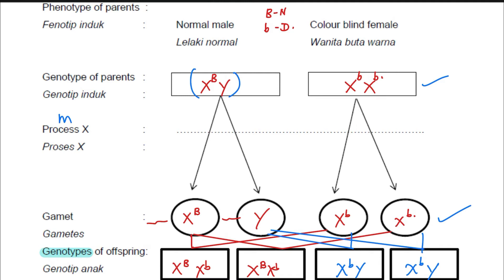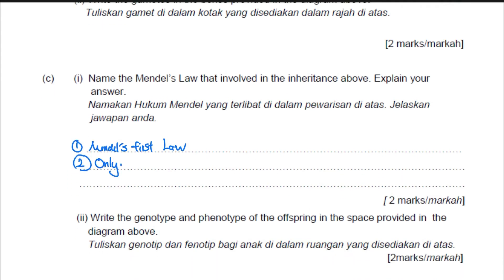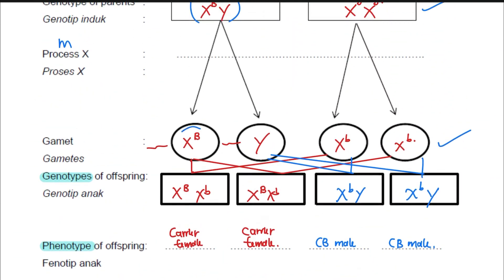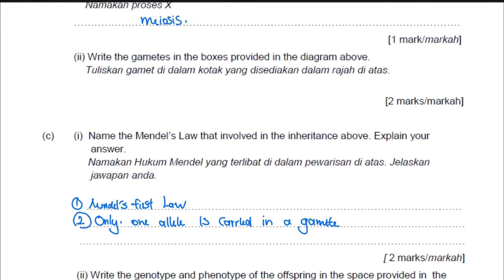Mendel's second law would involve two pairs of alleles. Since this question has only one pair, this is definitely Mendel's first law. Mendel's first law states that only one allele is carried in a gamete — which is what we saw here. Because of meiosis, the gamete only carries one allele. That's what Mendel's first law means.